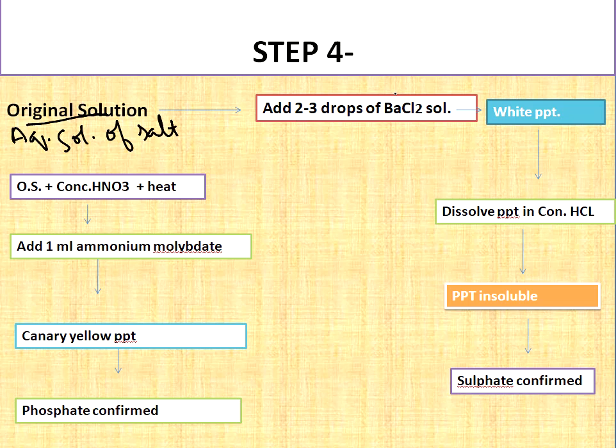Add two or three drops of barium chloride solution. If white precipitate is observed, dissolve this precipitate in concentrate HCl. If the precipitate remains insoluble, then sulfate will be confirmed.